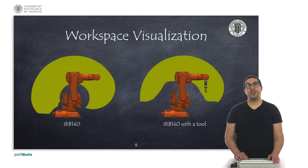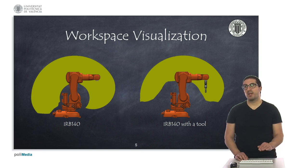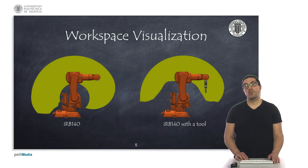Here I show the workspace of the IRB-140 robot from ABB. The computation of this space is important to know if a specific position and orientation of the end effector is achievable. We can see two cases: one without considering the robot's tool, and the second one considering the robot's tool. I have also considered possible collisions with the floor. As you can see, behind the robot the workspace is cut because in those configurations the robot would collide with the floor.